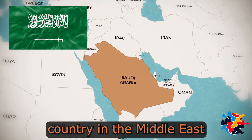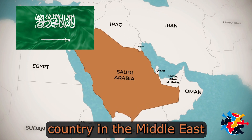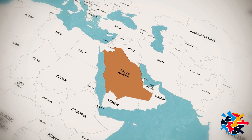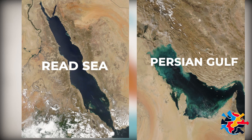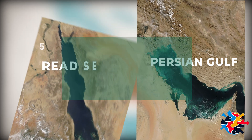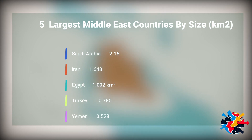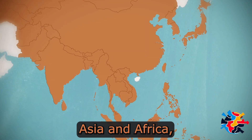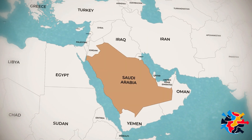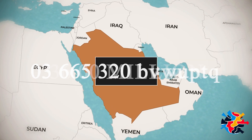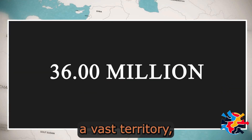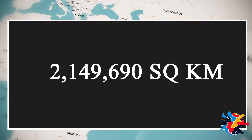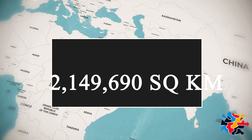This is Saudi Arabia, a country in the Middle East where it occupies four-fifths of the peninsula. It is bounded by the Red Sea and the Persian Gulf, making Saudi Arabia the largest country in the Middle East, and strategically located as the crossroads of Europe, Asia, and Africa, with a total population of approximately 36 million and inhabiting a vast territory measuring 2,149,690 square kilometers.